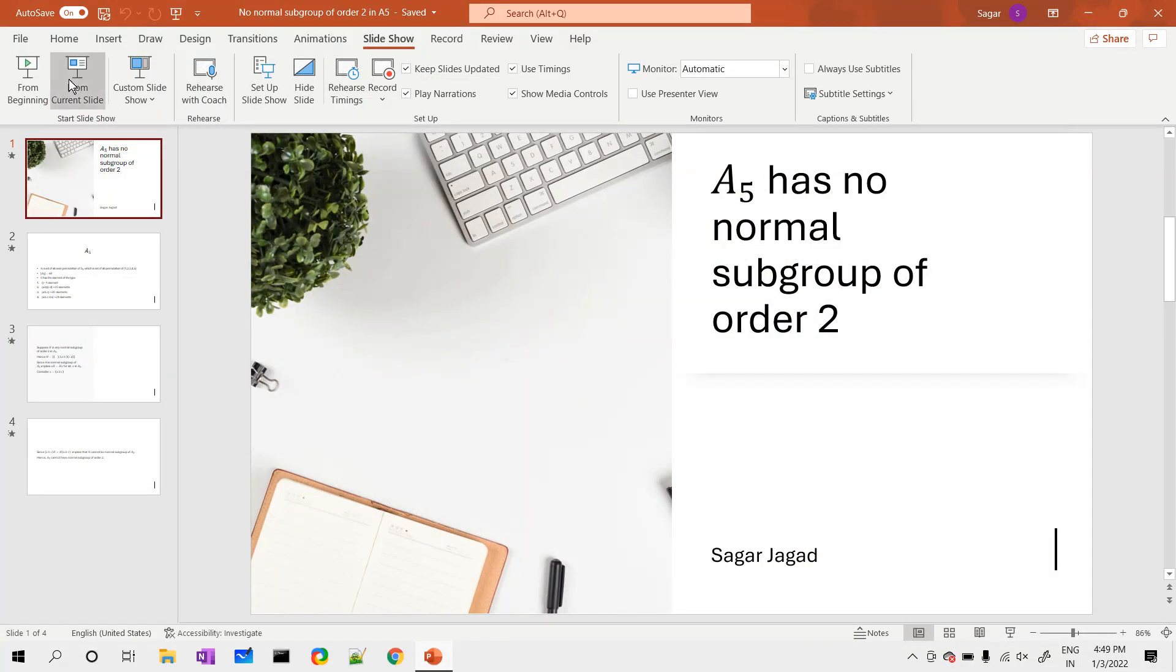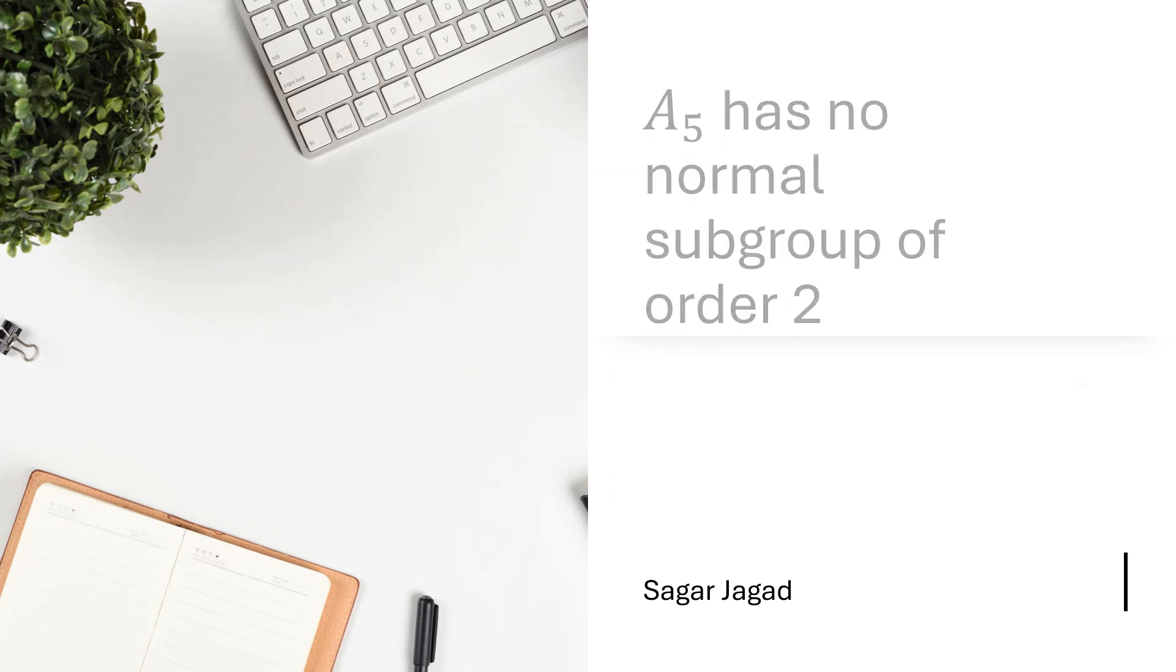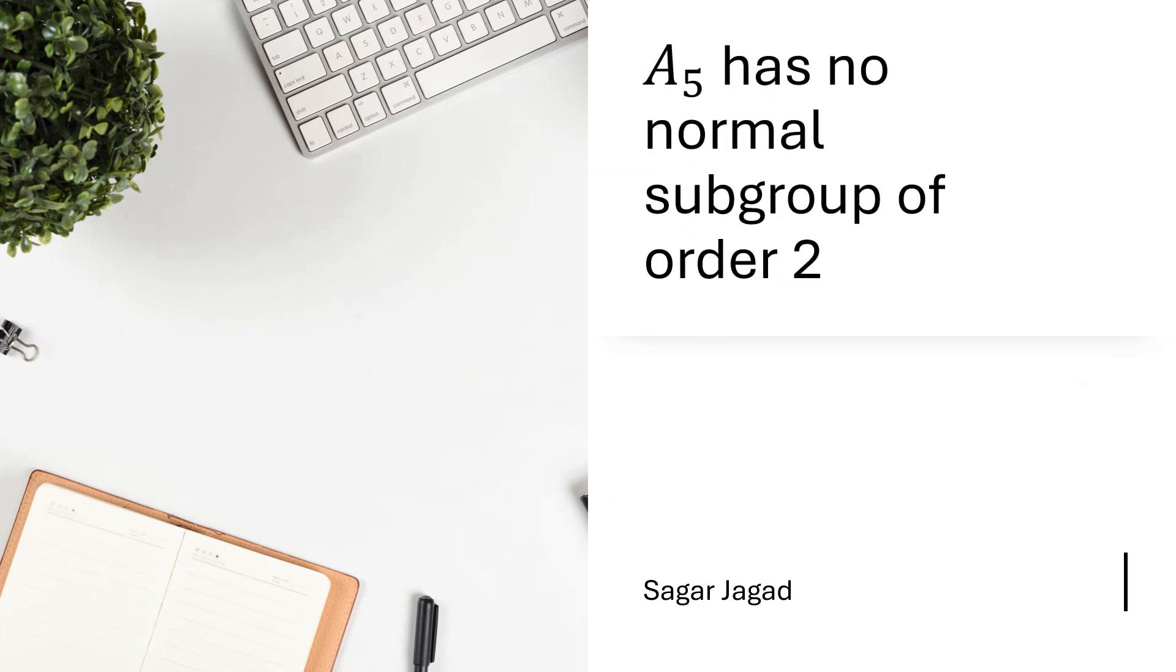Hello friends, welcome to this video. In this video we're going to talk about this result: A5 has no normal subgroup of order 2.